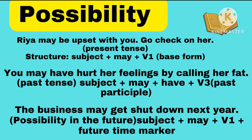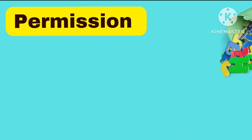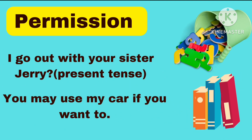Last one for possibility: 'The business may get shut down next year.' There is also a possibility here, and it's counted in the future. For future possibilities, you use subject + may + V1 (base form) along with a future time expression like 'next year'. So: 'The business may get shut down next year.'